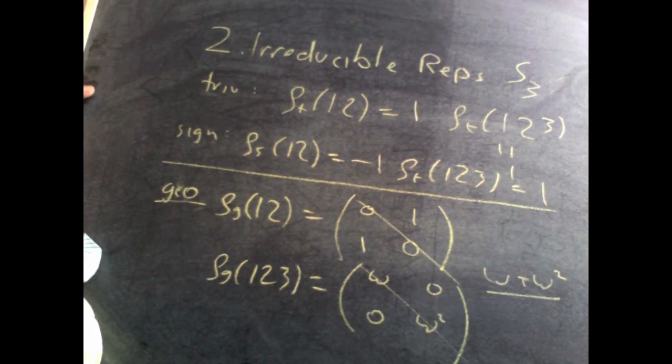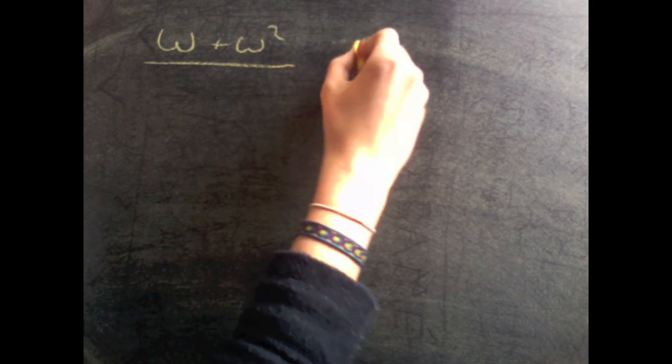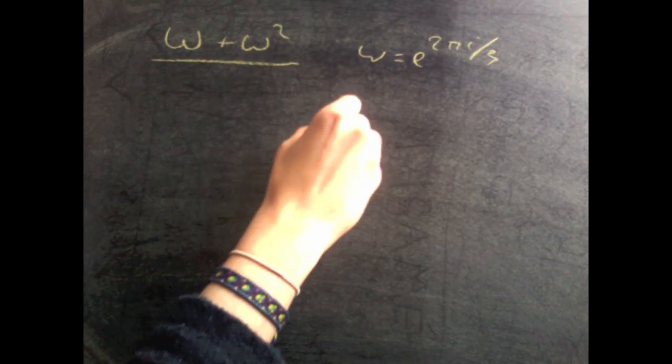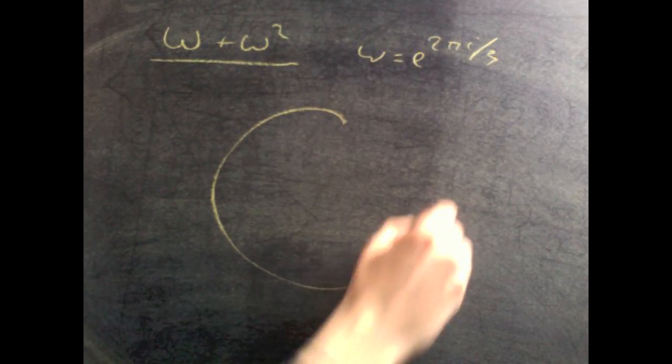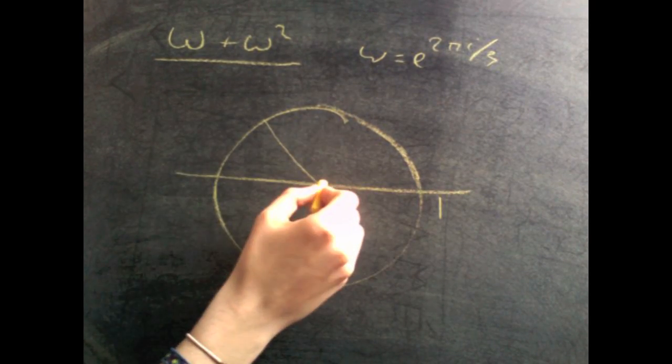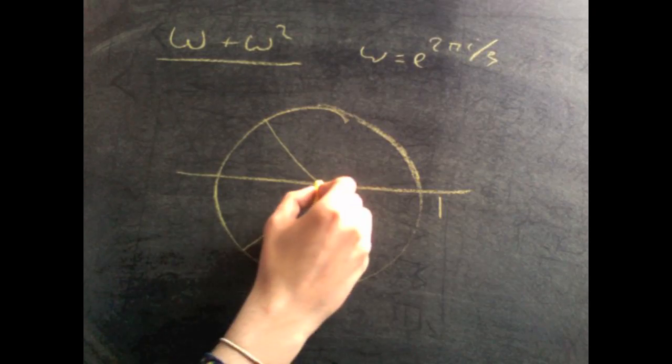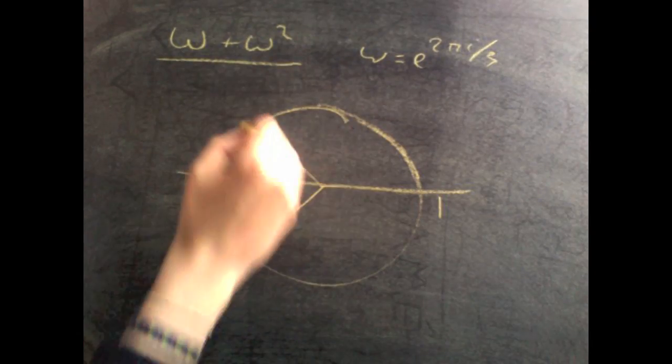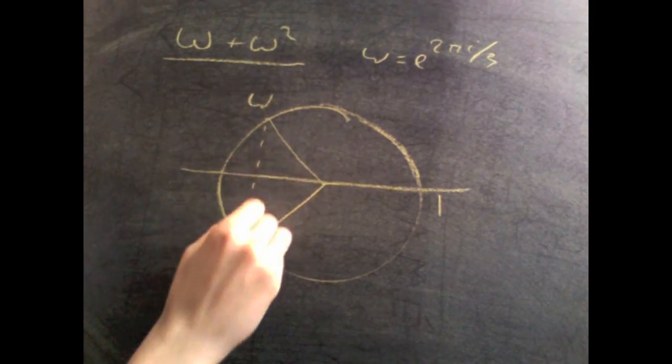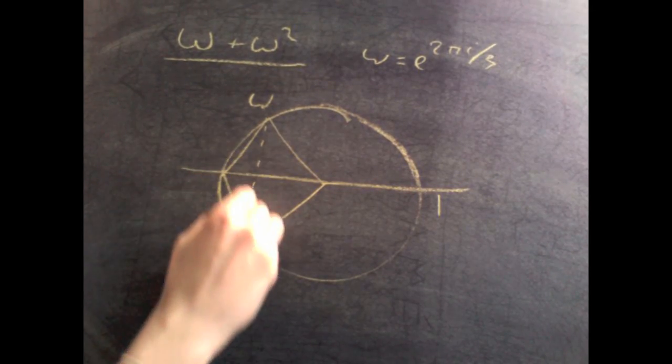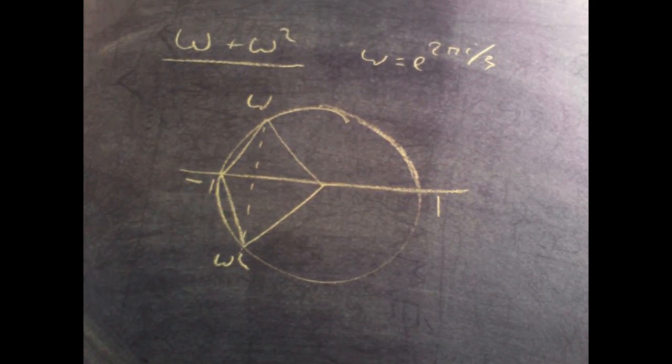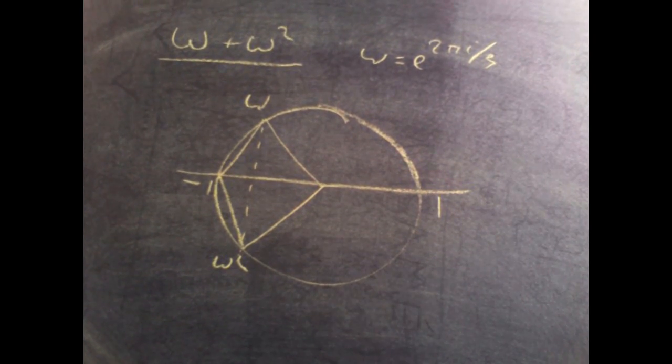So I'll quickly show you what omega plus omega squared is. Omega equals e to the 2 pi i over 3. I'm not going to prove this, I'm just going to show you. These are our cube roots of 1, omega and omega squared, and I claim that the sum of omega and omega squared is minus 1. I'm just letting you know where that comes from.